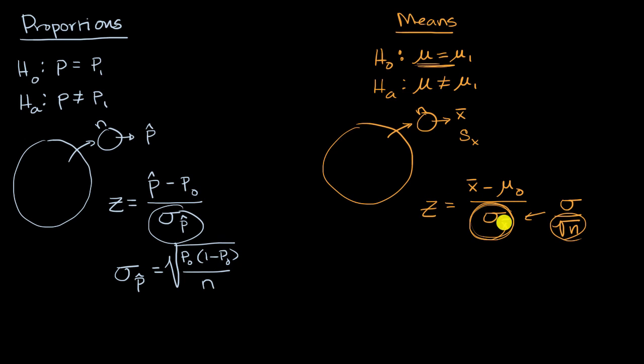So instead, what we do is we estimate this. And so we'll take the sample mean, we subtract from that the assumed population mean from the null hypothesis. And we divide by an estimate of this, which is going to be our sample standard deviation divided by the square root of n.